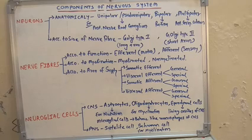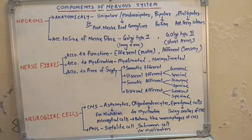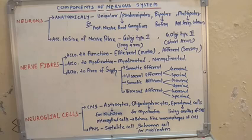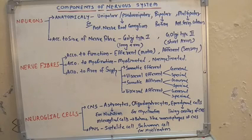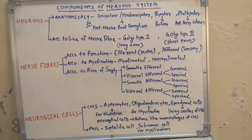As we know, every system is formed by two types of cells: the main cells of that system and the supportive cells. As we discussed about muscular tissue, the main cells are the myocytes. These myocytes combinedly form the muscle fibers, and finally these muscle fibers combinedly form the muscles. Also, there are some supportive cells for the formation of the tissue. Similarly, in the nervous system, there are also three types of cells.